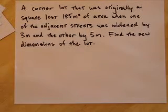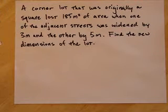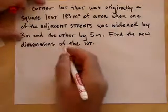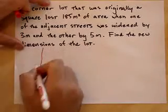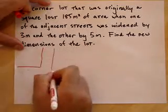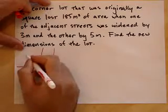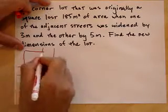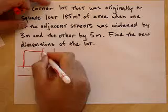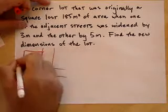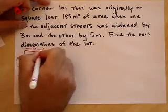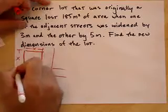One more problem here. We've got about a minute or two to do it. Corner lot that was originally a square lot lost 185 square meters of area when one of the adjacent streets was widened by 3 meters and the other by 5 meters. Find the new dimensions of the lot. What's a corner lot? So it's a lot in the corner of a street. So here's a street. Suppose like these are like, you know, these are streets, right? And they started out, there was a nice square corner lot, right? Which means it was originally like an x by, this was x and this was x, right? This whole distance. Okay?